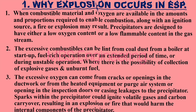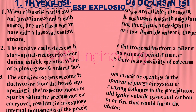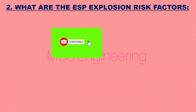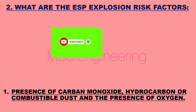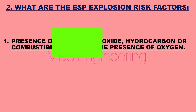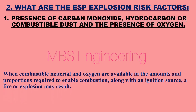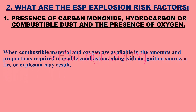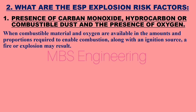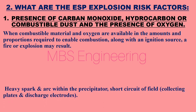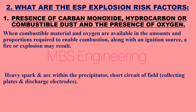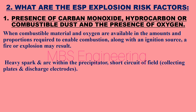Next, we will understand what the ESP explosion risk factors are. Risk Factor 1: The presence of carbon monoxide (CO), hydrocarbons, or combustible dust, along with the presence of oxygen. When combustible material and oxygen are available in the amounts and proportions required to enable combustion, along with an ignition source, a fire or explosion may result.